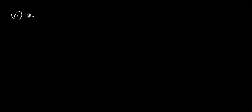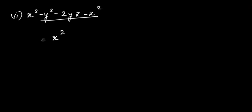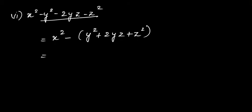Sixth question: x² - y² - 2yz - z². Write x² as it is, then from the next three terms take minus as common, giving y² + 2yz + z². So we have x² - (y² + 2yz + z²), which is x² - (y + z)². Now expand using the a² - b² formula.